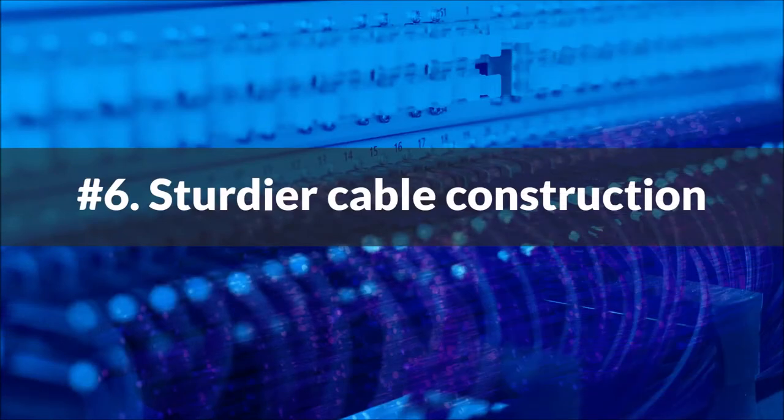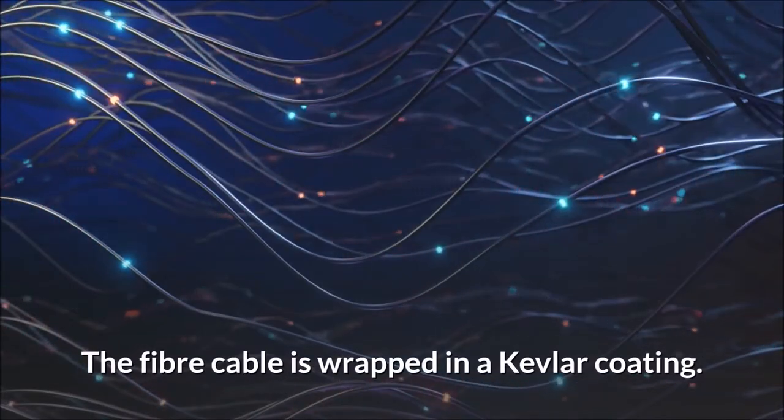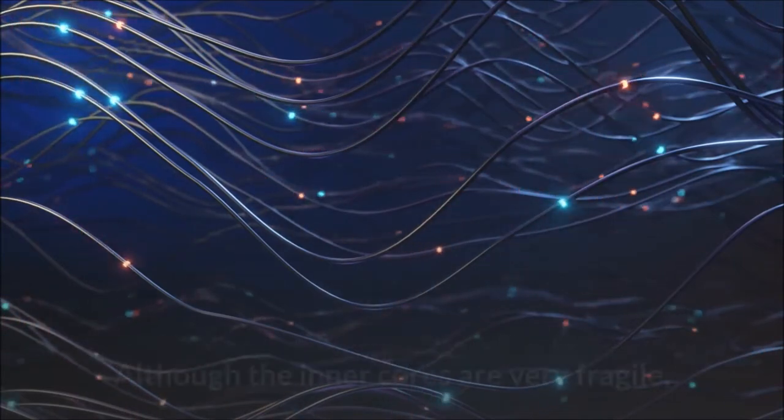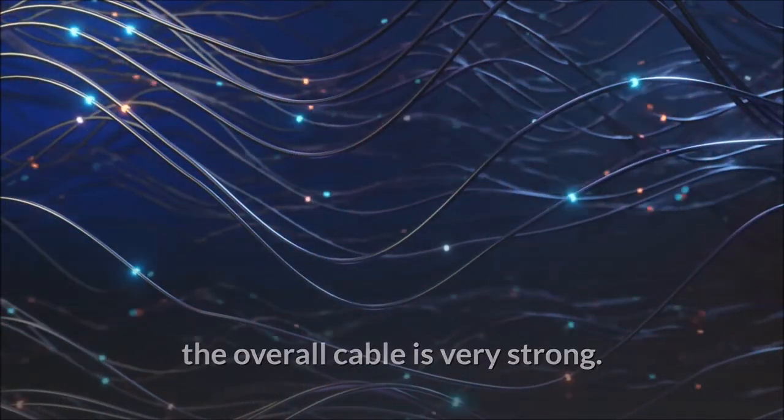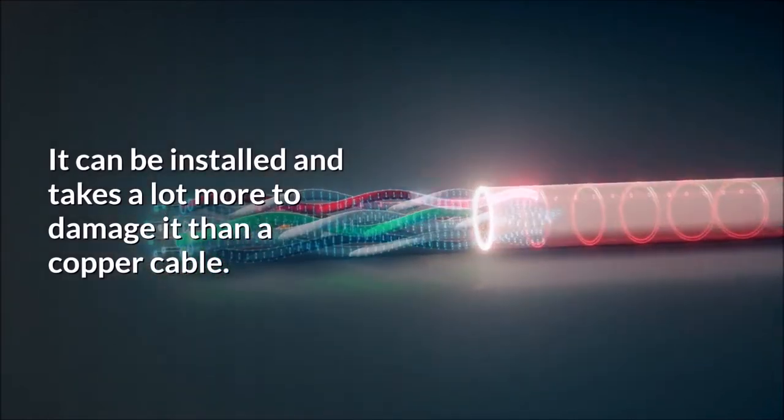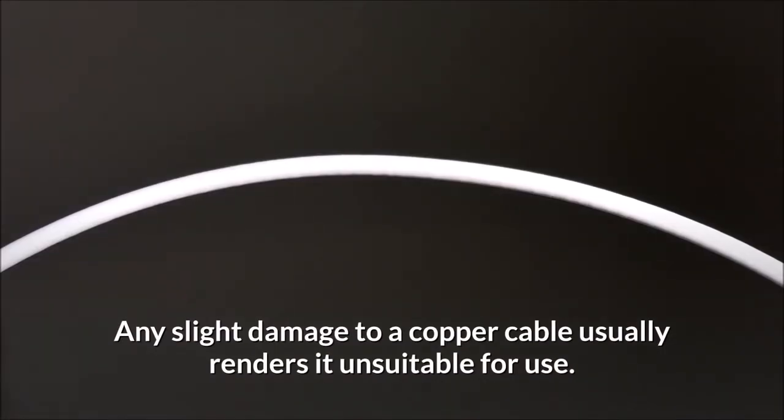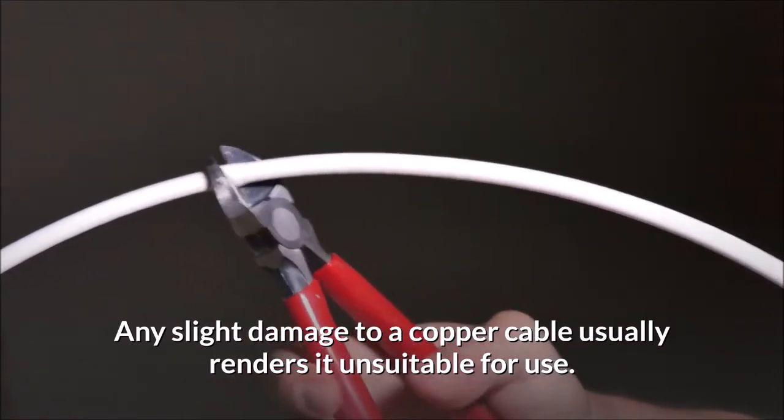Number 6: Sturdier Cable Construction. The fiber cable is wrapped in a Kevlar coating. Although the inner cores are very fragile, the overall cable is very strong. It can be installed and takes a lot more to damage it than a copper cable. Any slight damage to a copper cable usually renders it unsuitable for use.